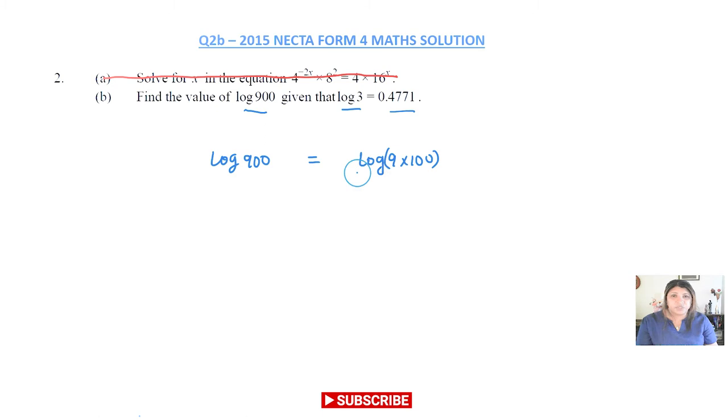Now I can use the product rule to separate those two. So that's the same as log 9 + log 100.